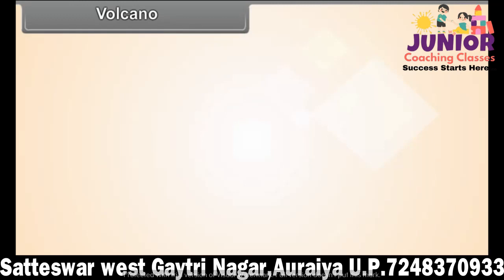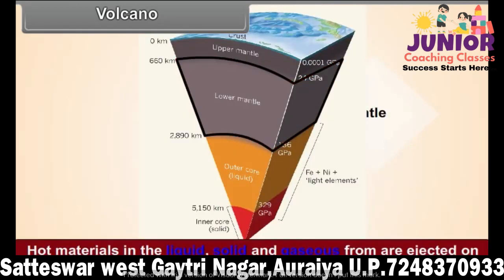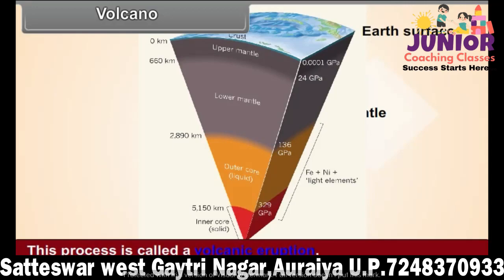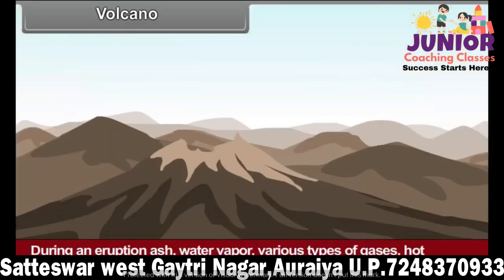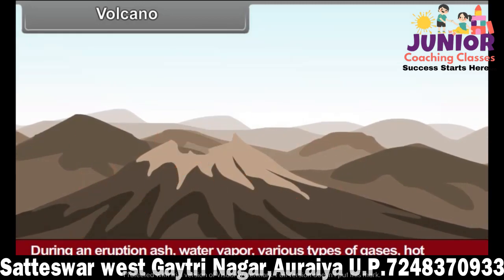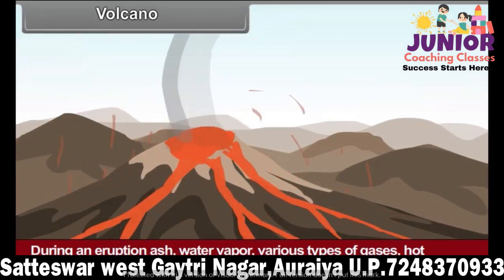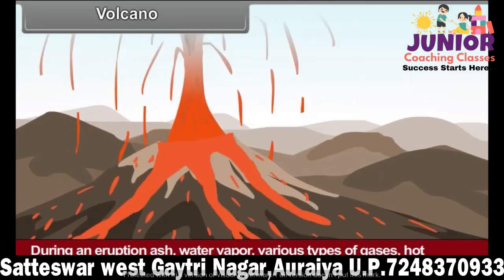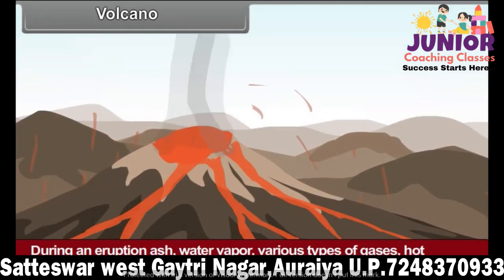Volcano. Hot materials in liquid, solid, and gaseous form are ejected onto the earth's surface from the mantle of the earth. This process is called a volcanic eruption. During an eruption, ash, water vapor, various types of gases, and hot molten rocks in the form of lava are thrown out.